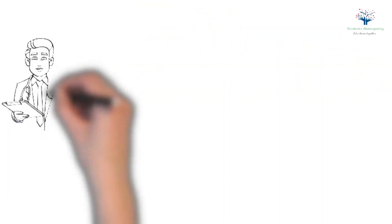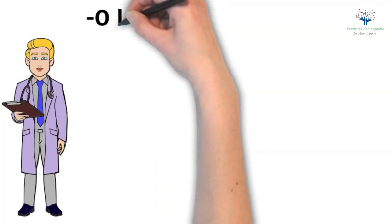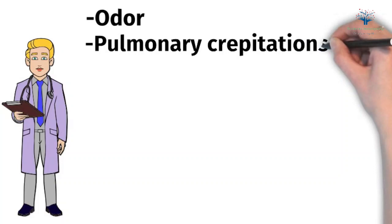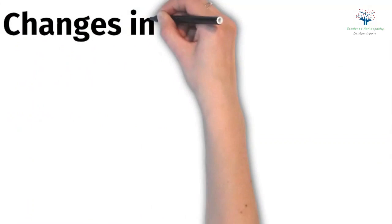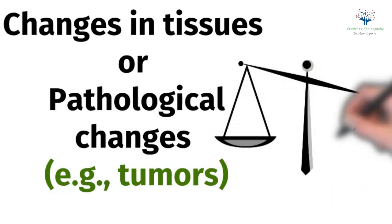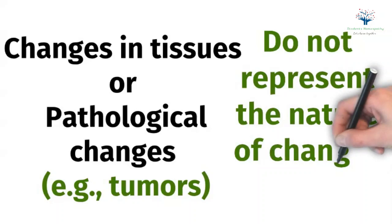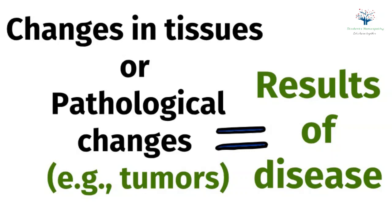Apart from this, the physician should also note down the abnormalities he notices, like the odor and findings of physical examination such as pulmonary crepitations or rales, cardiac murmurs, temperature, pallor or pale conjunctiva, skin pigmentation, cyanosis, etc. However, the changes in tissues or the pathological changes like tumors are of least importance in the selection of the remedy, because they do not represent the nature of changes in state — they are only the result of the disease.